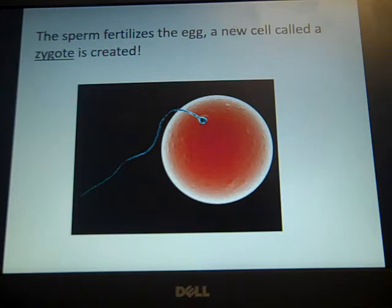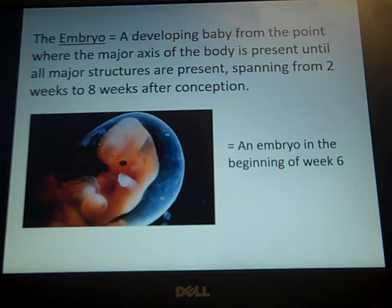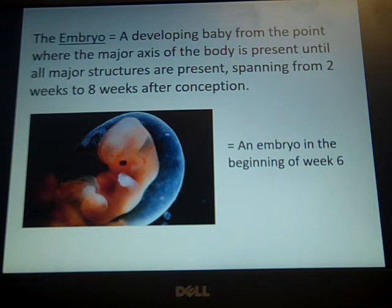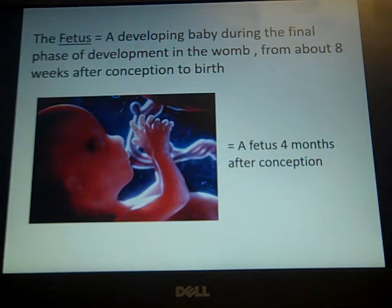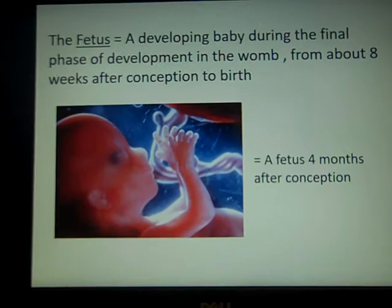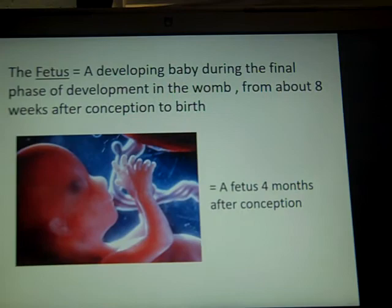The sperm will fertilize the egg, and the new cell is referred to as a zygote. You have the embryo, which is a developing baby from the point where the major axis of the body is present and all major structures are present, spanning from two weeks to eight weeks after conception. You can see an image of an embryo at the beginning of week six. The fetus is the developing baby during the final phase of development, from about eight weeks after conception to birth. You see an image of a fetus at four months after conception.